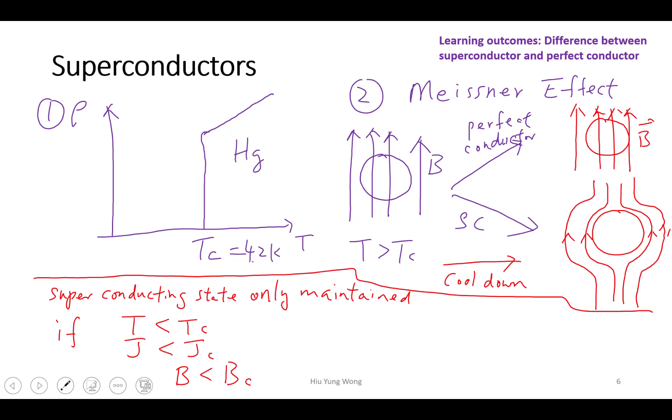A student asks about critical magnetic field and current being dependent on each other versus inherent to the material, and whether critical temperature is inherent to the material. The instructor responds that it may depend on pressure, but notes that pressure can change the structure, making it effectively a different material. At least the current and magnetic field are interrelated - if you have a larger magnetic field, you have a smaller critical current.